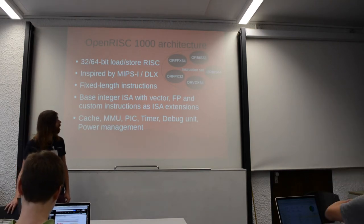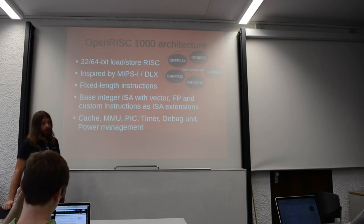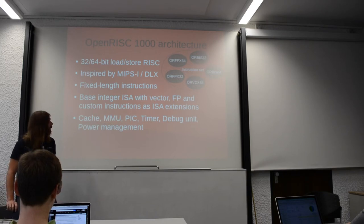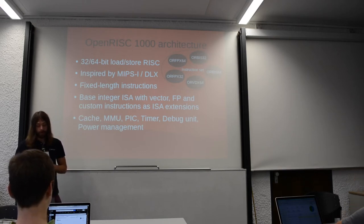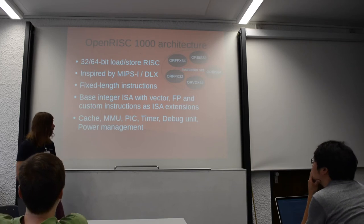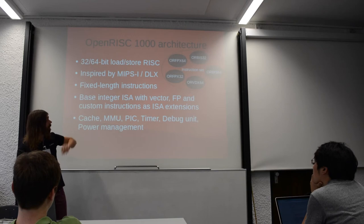The OpenRISC 1000 architecture is a 32/64-bit load-store RISC — the 64-bit part has never been implemented, as far as I know. It was inspired by MIPS and the DLX architecture. It has a basic integral ISA with modular extensions for floating point, vector processing, and custom instructions. It also has caches, a timer, debug units, and power management — pretty much the basic stuff.